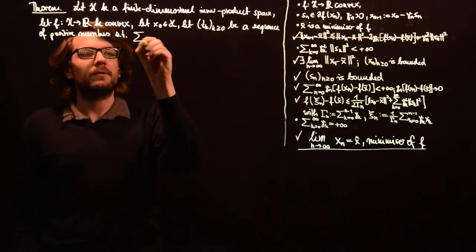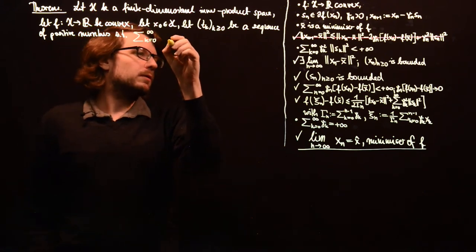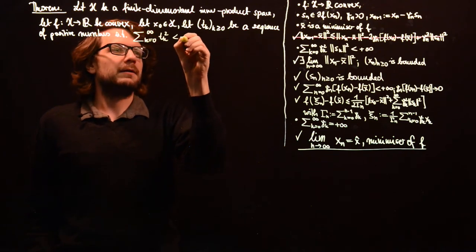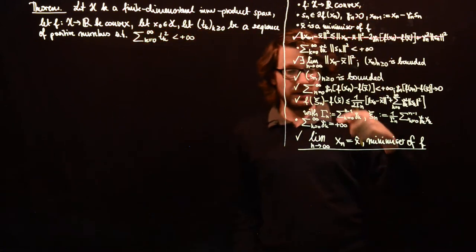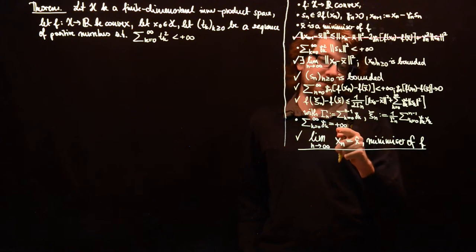And down here, we want the sum of gamma_k to be plus infinity. So, we want the sum of t_k over norm of s_k also to be plus infinity.